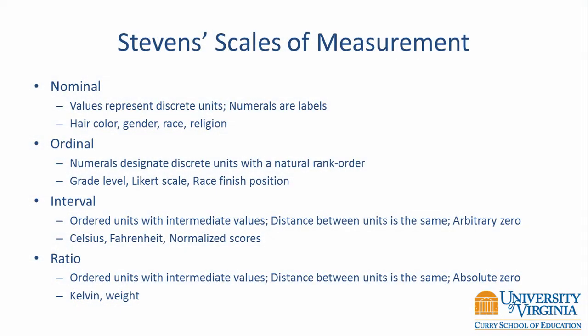There are many frameworks for classifying data. The oldest and most recognized in the social sciences was created by Stevens. In his framework, there are four types of data: nominal, ordinal, interval, and ratio.